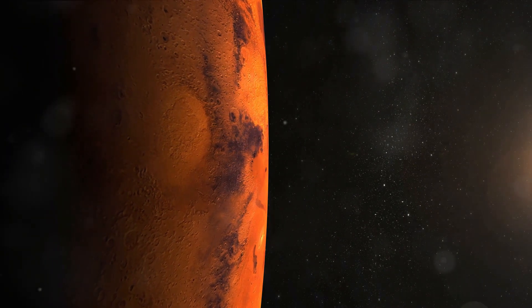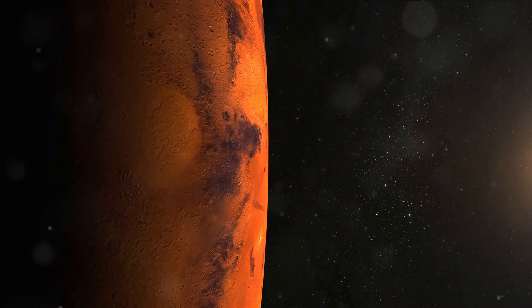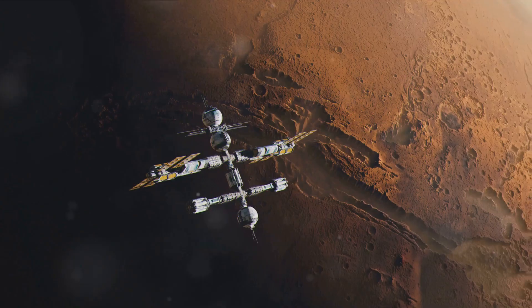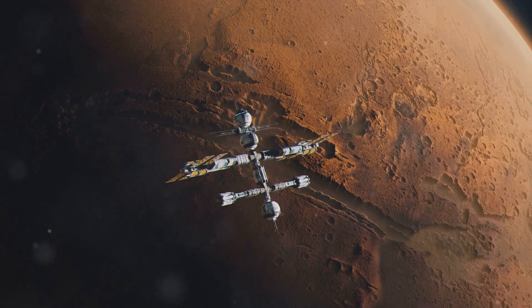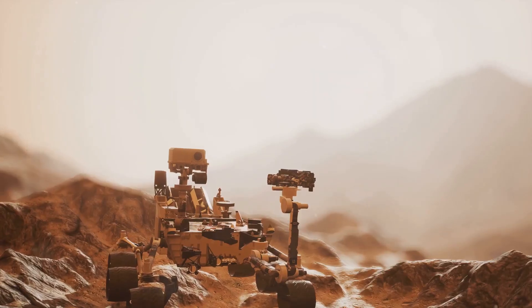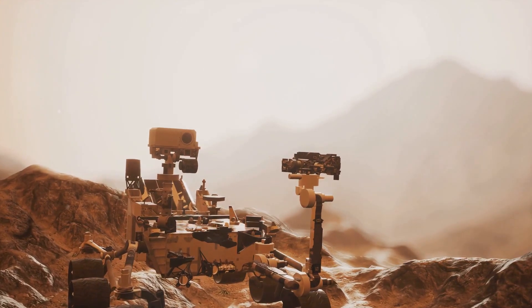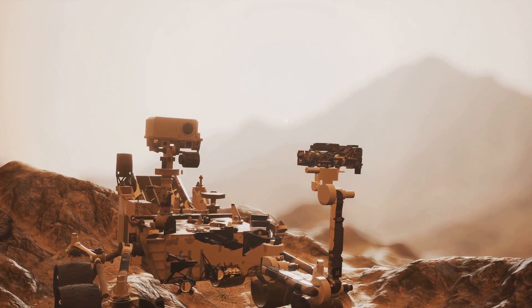But Mars has more to offer than just its landscapes—it is accompanied by two faithful companions, its moons Phobos and Deimos. These two celestial bodies, much smaller than our moon, follow Mars in its journey around the sun. Intriguingly, recent missions suggest that Mars may have once held water, adding another layer of mystery to this fascinating planet.